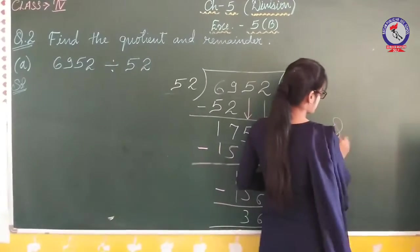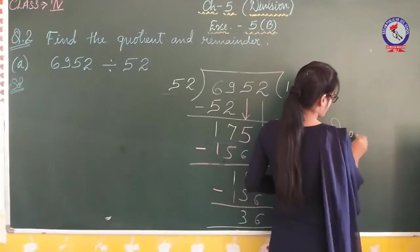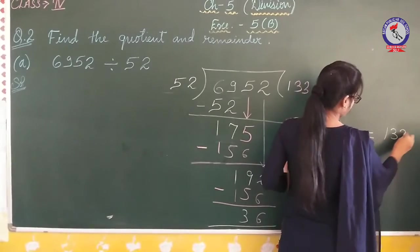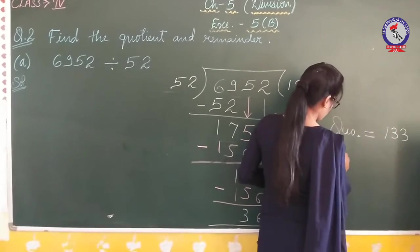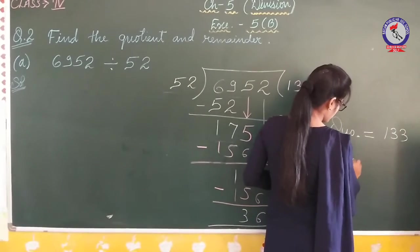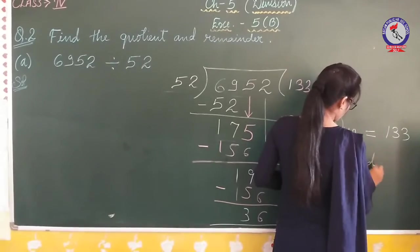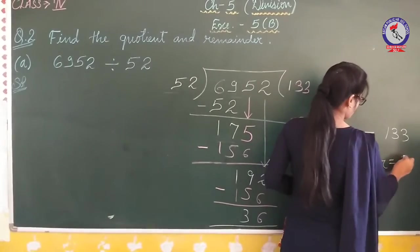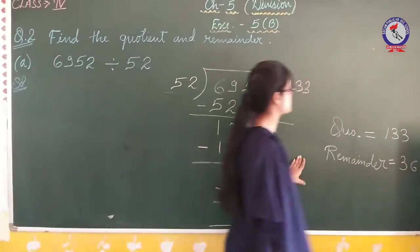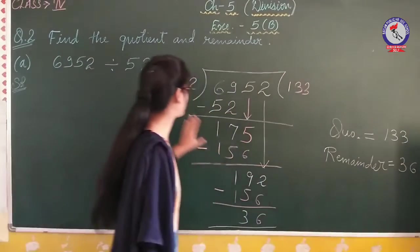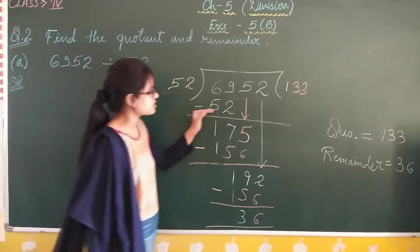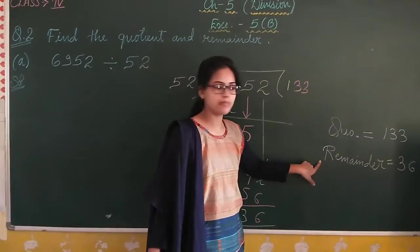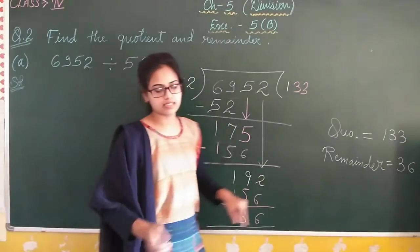So now we have our final answer. The quotient is 133 and our remainder is 36.